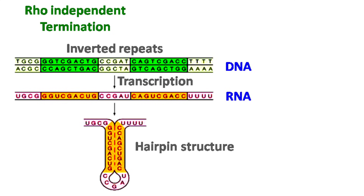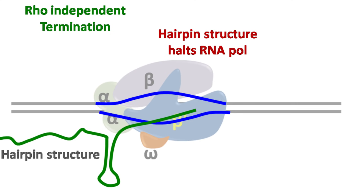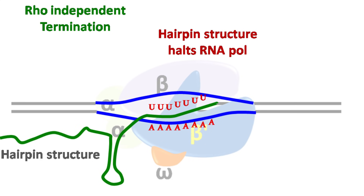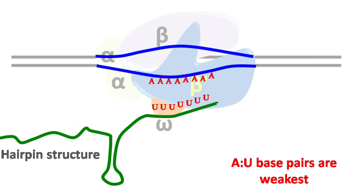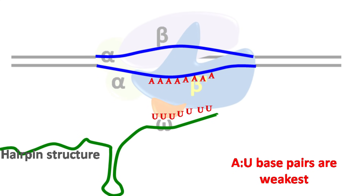When the RNA polymerase transcribes the inverted repeat sequence, the resulting RNA forms a stem loop structure which resembles a hairpin by base pairing with itself. The hairpin structure halts the RNA polymerase enzyme. The inverted repeat sequence is further followed by an AT-rich sequence, which after transcription forms AU base pairs. The AU base pairs are the weakest of all the base pairs, even weaker than AT base pairs. Because of this, the RNA is finally released, ending the transcription.